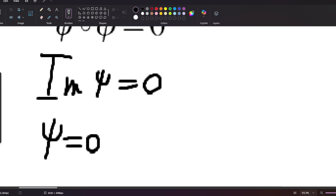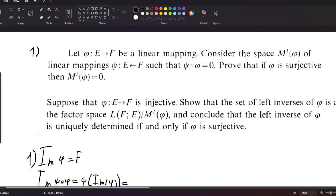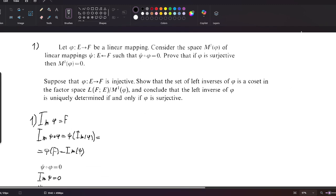That's evident because if it wasn't the zero mapping, we'd have some argument such that psi of that argument is not zero, and it would be included in the image. Now on to the next part.